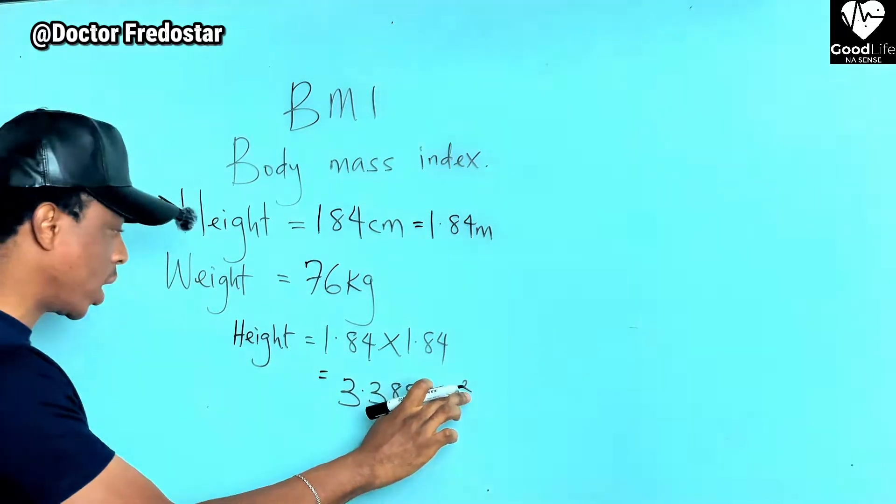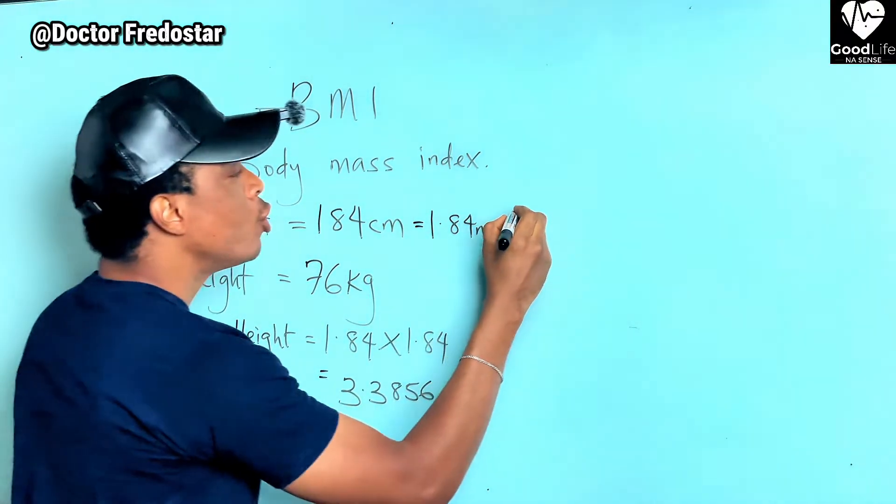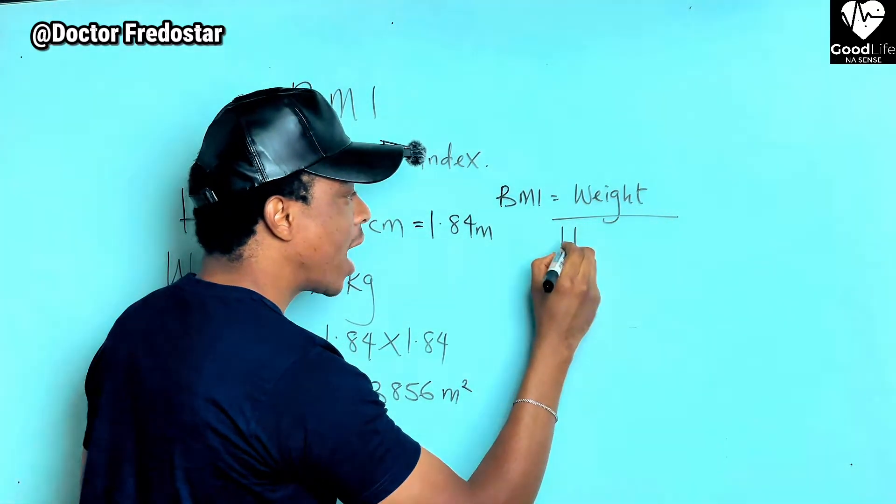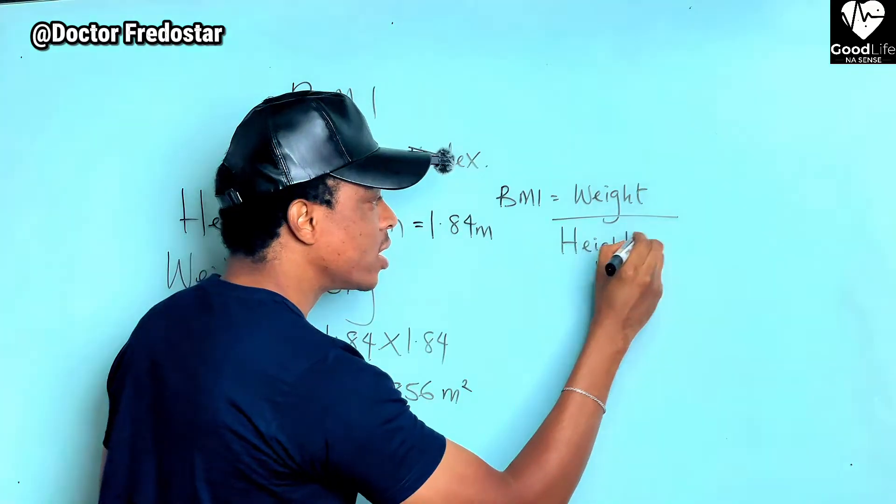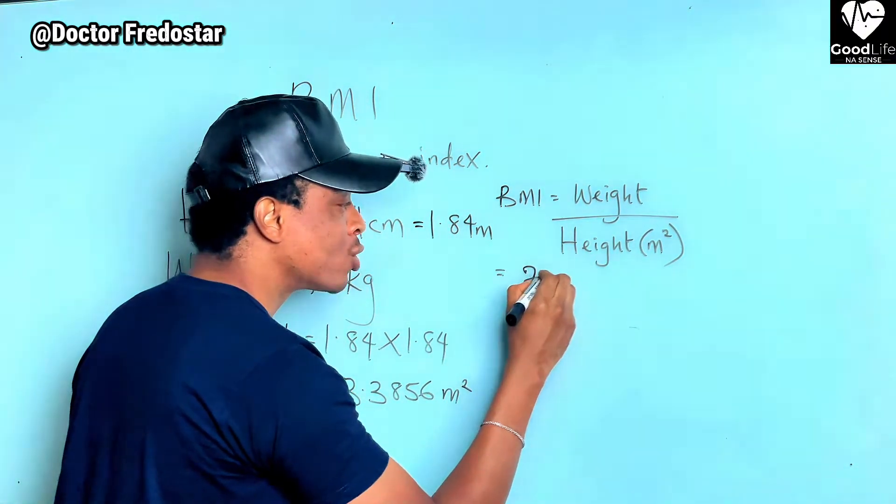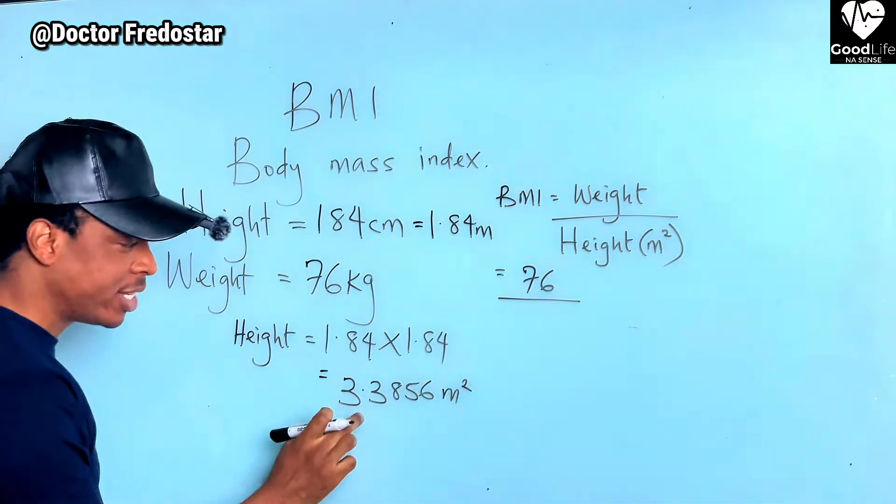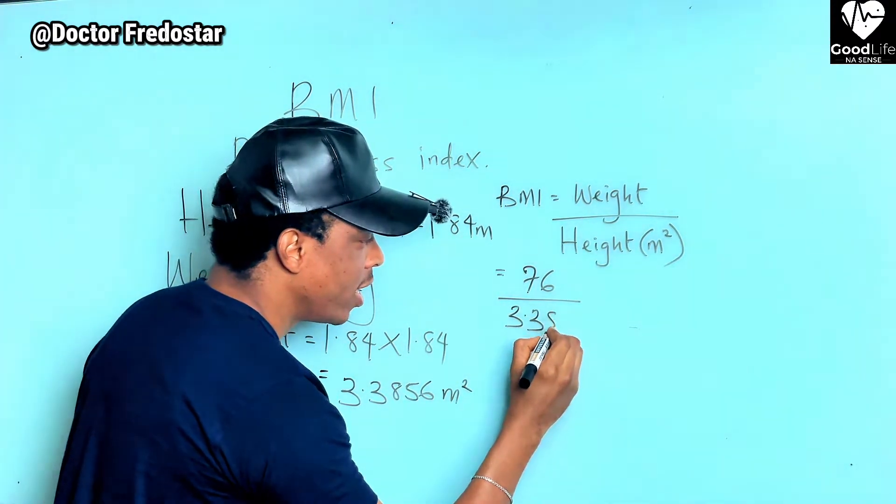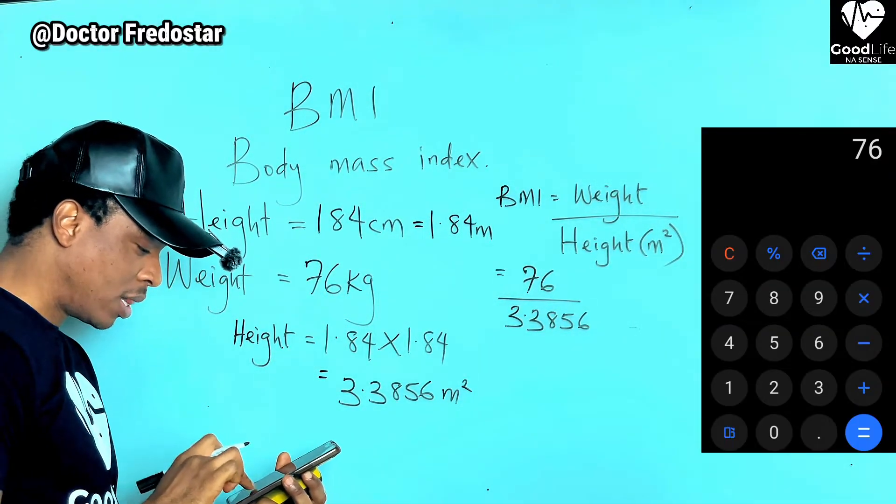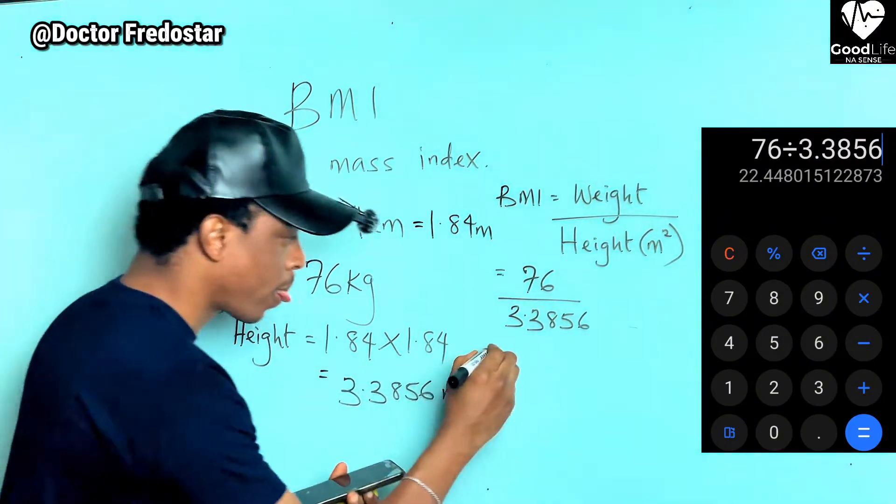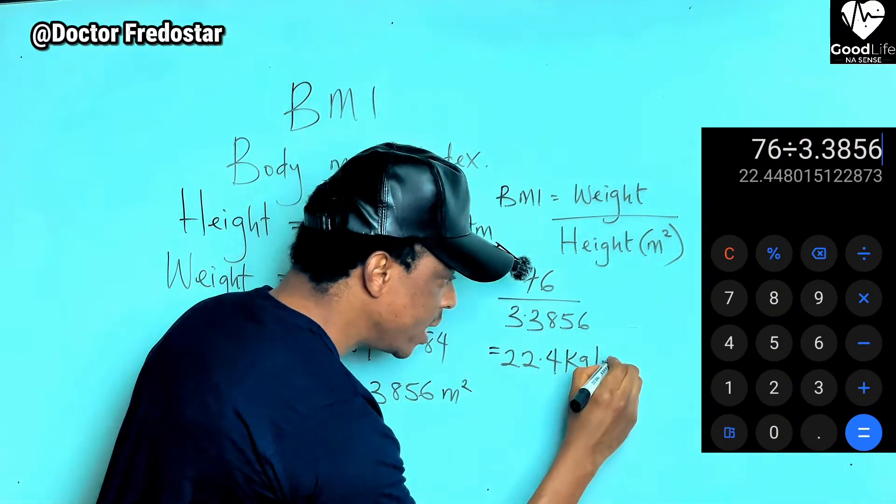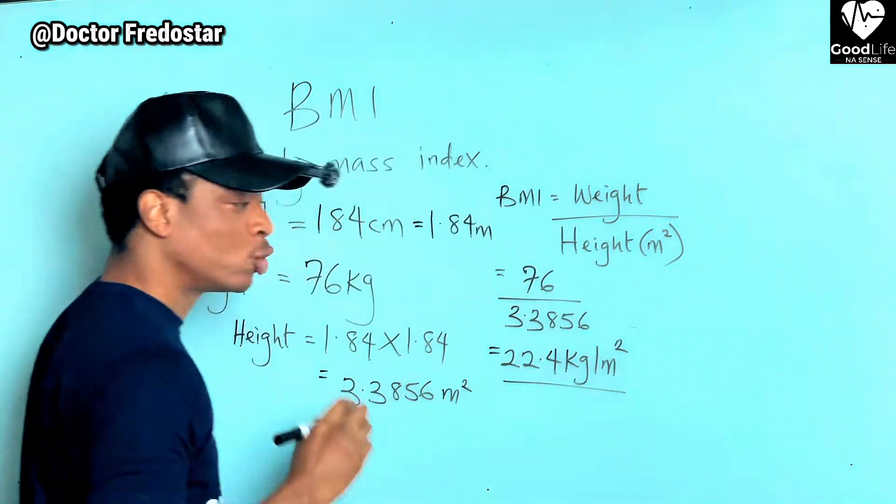Then what you can do, you can say your BMI, your BMI now, your weight divided by your height, your height in meter square. So waiting, the weight now is 76 kilograms. So 76 divided by this one, 3.3856. So let's divide it now. 76 divided by 3.3856 is equal to what? 22.4 kilograms per meter square. Now my BMI is 22.4.